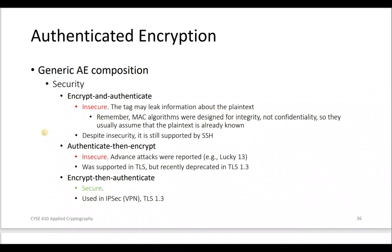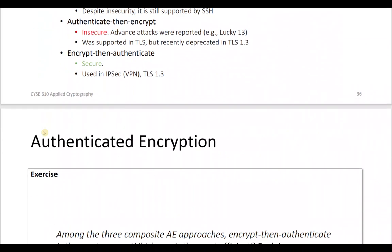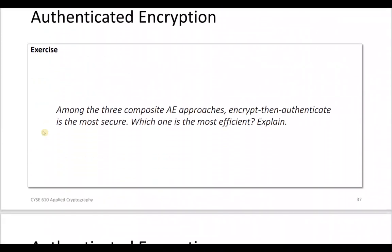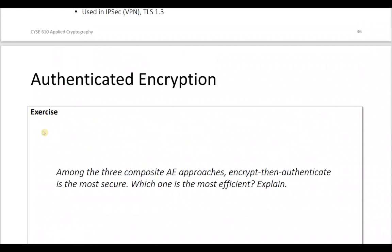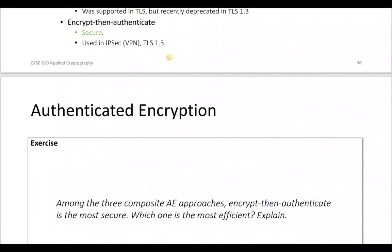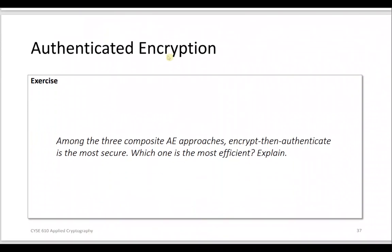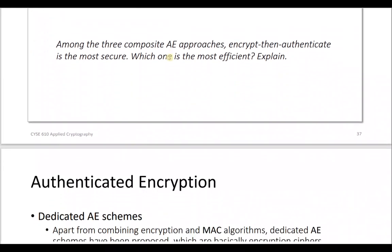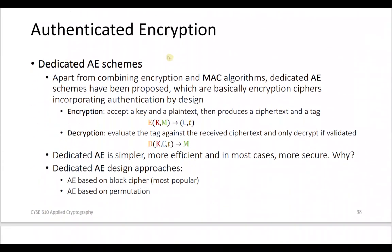Encrypt then authenticate is considered secure. It is also the most efficient of the three compositions because we only decrypt if the tag is verified, saving an unnecessary step. In the other compositions, decryption happens even when the tag might not be verified, which is wasteful.